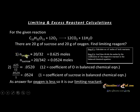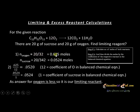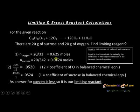Step one: calculate the number of moles of both reactants. The mass of oxygen is 20 grams and the molecular mass of O₂ is 32 (16 × 2), so moles of O₂ = 20/32 = 0.625 moles. Similarly, sucrose has a mass of 20 grams and a molecular mass of 342, so moles of sucrose = 20/342 = 0.0584 moles.